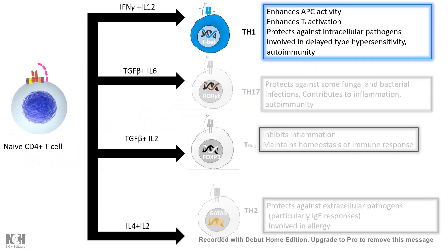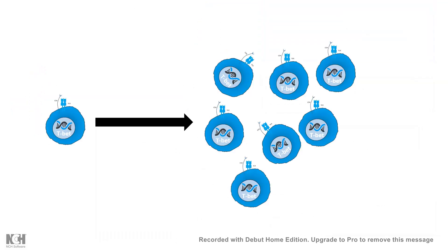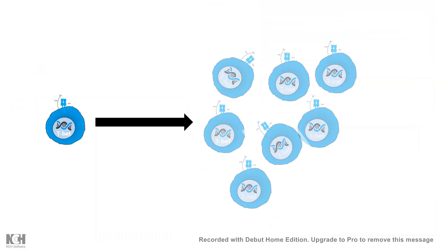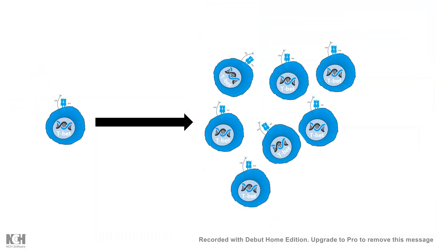IL-12 is an autocrine cytokine that drives differentiation of naive CD4 T-cells into the Th1 population. In delayed Type 4 hypersensitivity, the Th1 subpopulation is the prevalent one. The naive CD4 T-cells rapidly differentiate into Th1 cells, and their numbers increase over time. Macrophages and dendritic cells are also involved in this phase.